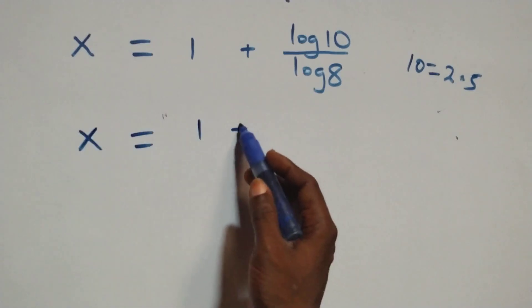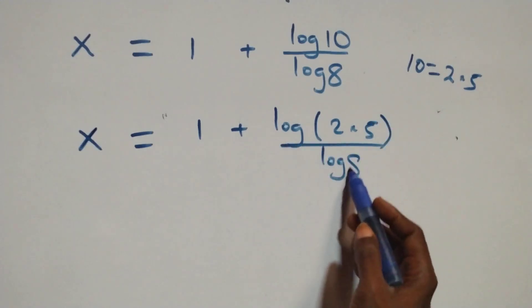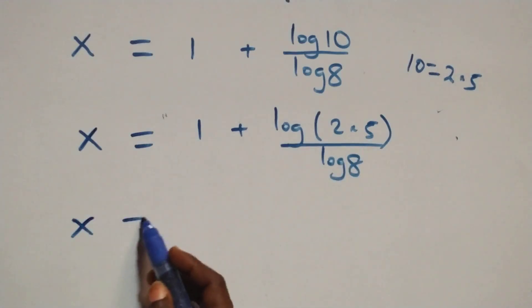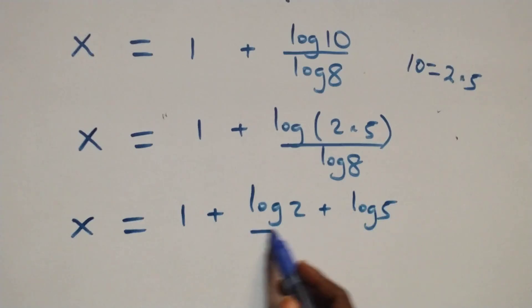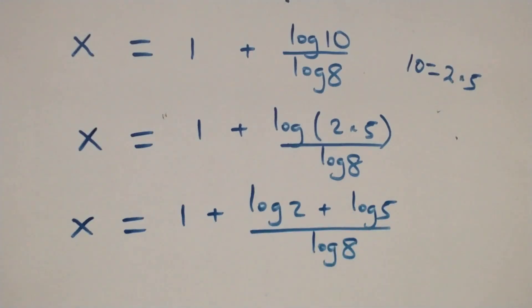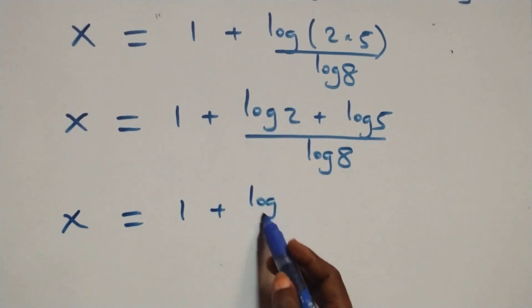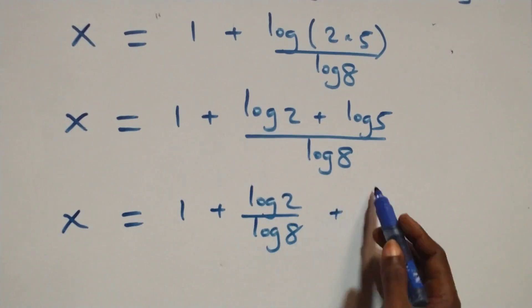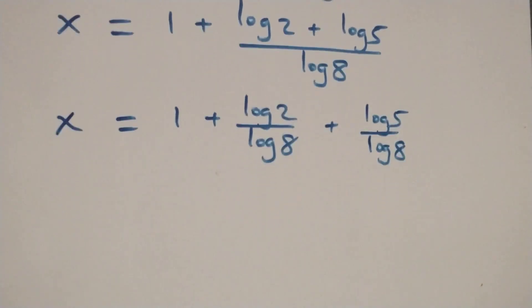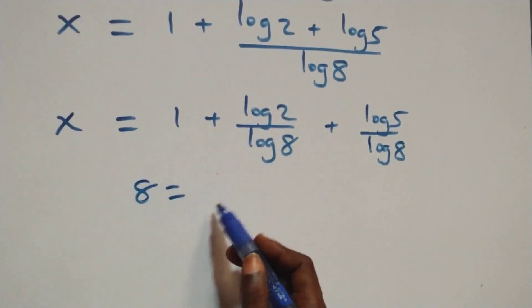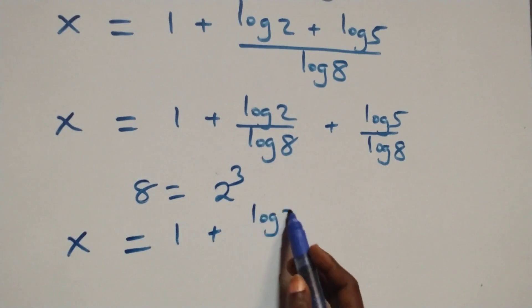We express 10 as 2 times 5, so x equals 1 plus log(2 times 5) over log 8. Separating the fraction gives x equals 1 plus log 2 over log 8 plus log 5 over log 8.